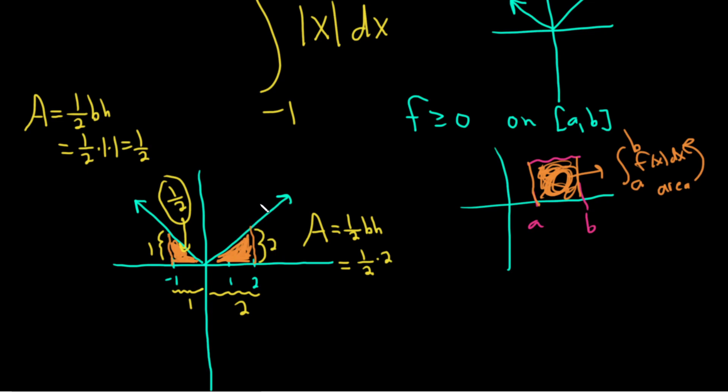So by the way, the absolute value of x—the reason I know this height is one, I probably should have mentioned this—is that it's x if x is greater than or equal to zero, and it's minus x if x is less than zero. This is the definition of the absolute value.